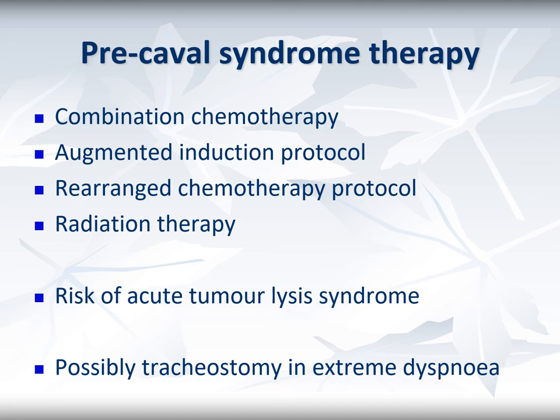I more commonly use the CHOP protocol and move individual doses around — rather than saving doxorubicin for week four, I move it to week one in B-cell lymphomas causing pre-caval syndrome, as doxorubicin is the most effective single agent. For chemotherapy-resistant cases or T-cell lymphomas, radiation therapy can also be used; an effective anti-lymphoma dose can usually be safely given despite inclusion of much of the throat and mediastinum, as neighbouring structures are not so sensitive to radiation in the short term. Sometimes these patients have a very large tumour burden and are at risk of developing acute tumour lysis syndrome. I have only ever needed to use a tracheostomy in one such patient throughout my career.